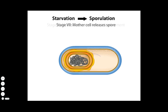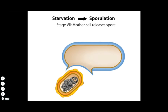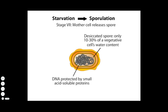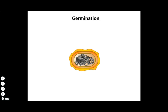In stage 7, the mother cell, now called a sporangium, releases the mature spore. Spores are resistant to many environmental stresses that would kill vegetative cells. This resistance is due in part to a spore having only 10 to 30% of a vegetative cell's water content. Spores also contain small acid-soluble proteins that bind to and protect DNA from damage by ultraviolet light and various toxic chemicals. Fully mature spores can exist in soil for at least 50 to 100 years and have been known to last thousands of years. Once proper nutrient conditions arise, another genetic program called germination is triggered to wake the dormant cell, dissolve the spore cortex and coat, and release a rehydrated, viable vegetative cell.